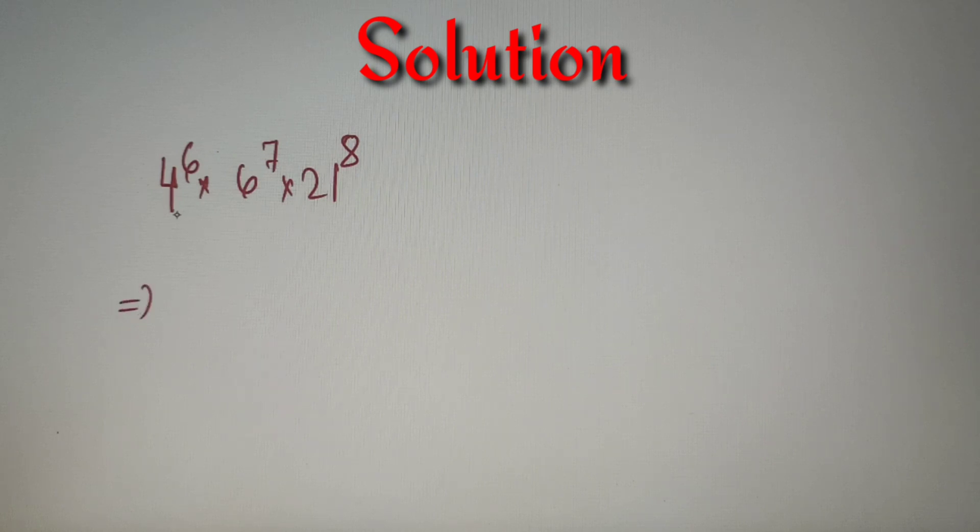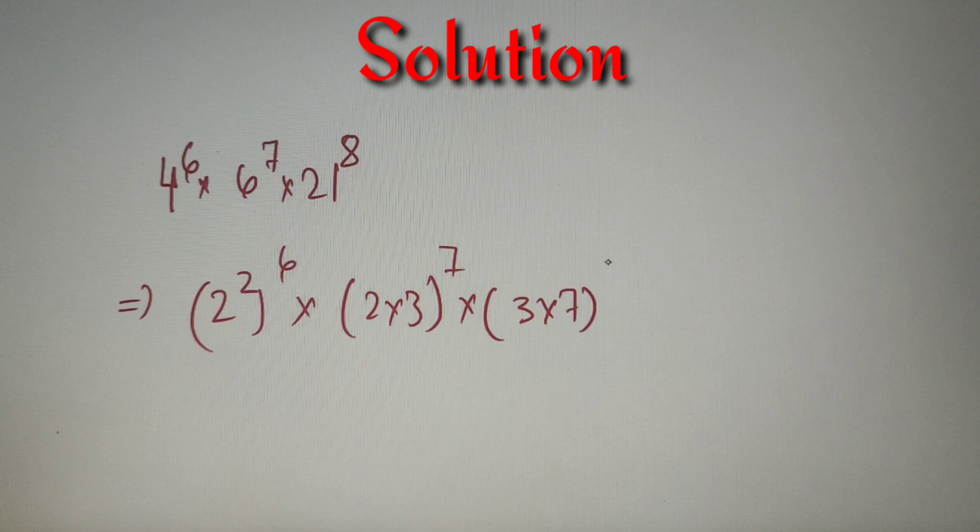So we can say that 4 raised power 6 can be written as 2 raised power 2 raised power 6. 6 can be written as 2 into 3 and it is raised power 7, and 21 can be broken into 3 into 7 and it is raised power 8.